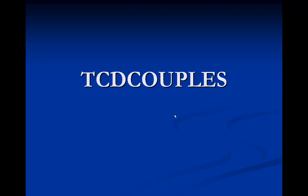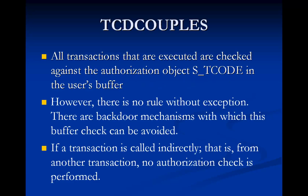In this session, we are going to learn about a special table called TCD Couples. When a user logs into the system and executes a transaction code, the values in the object are checked in the user buffer. However, there are backdoor mechanisms with which these buffer checks can be avoided — that is, if a transaction is called indirectly from another transaction, no authorization check is performed.